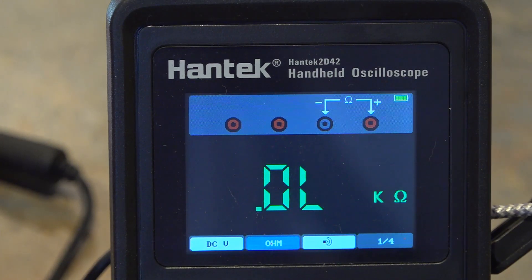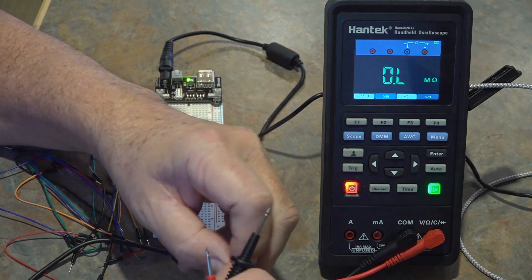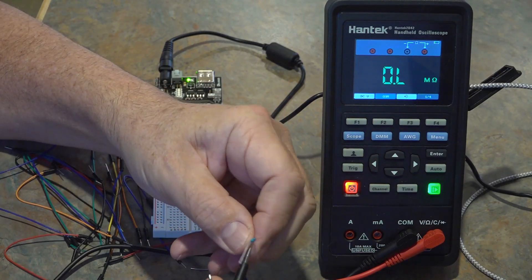And this one, there we go, this one looks like it's a 2k resistor. It's coming in at about 1.990 ohms or 1.990k ohms.